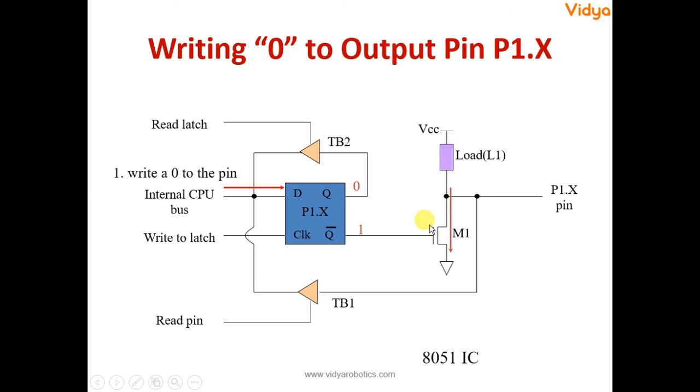The transistor is forward biased and it is conducting. So the current flows from VCC load towards the ground inside the transistor of port pin. And therefore what we get at this pin is ground or 0 potential. That is how we write down logic 1 and logic 0 onto a port pin.